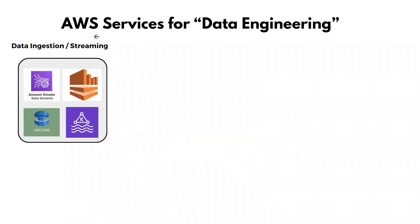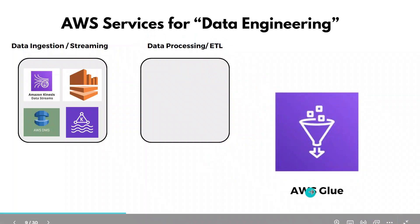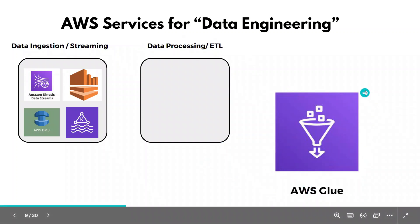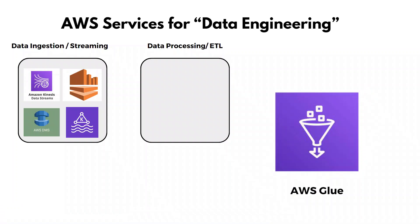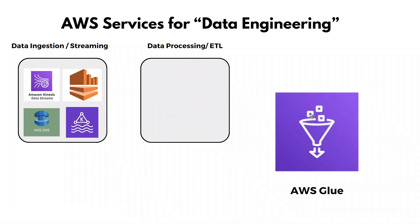Once you have the data ingested or streamed into the cloud, the next part is data processing or ETL — extract, transform, load. The first service is AWS Glue, which is a fully managed ETL service by AWS. It provides functionalities like data cataloging and ETL transformations using Spark and many other tools. AWS Glue is one of the most important ETL services in AWS.